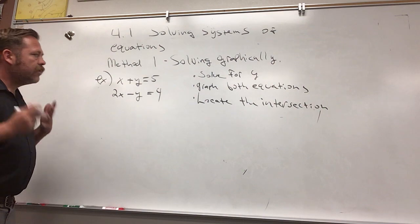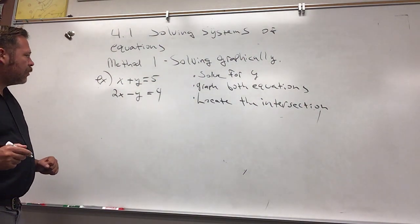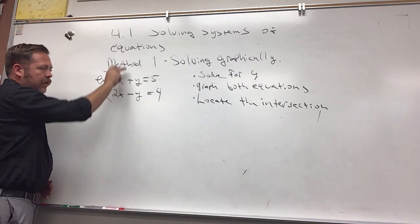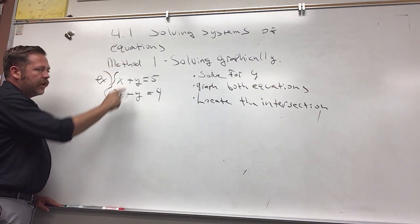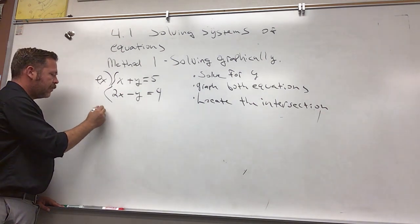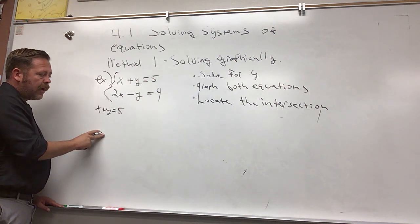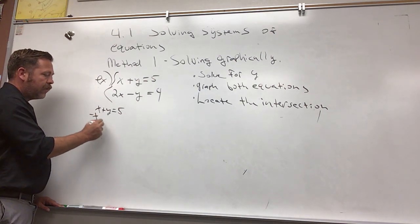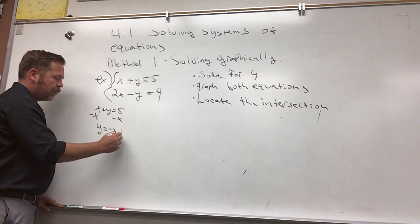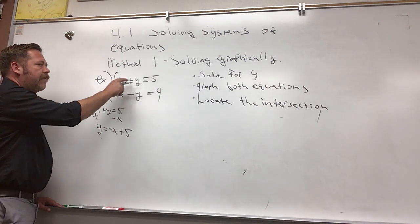The reason that we solve for y initially is to get each of the equations in slope-intercept form. I'm going to take the first equation, x plus y equals 5, and solve for y to get it in slope-intercept form so it's easy to graph. I get y equals negative x plus 5. That is the first equation, just modified so that we're ready to graph.